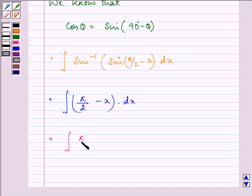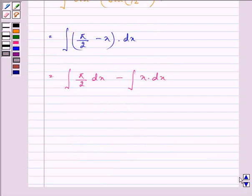That is, integral of pi by 2 dx minus integral of x dx, which equals pi by 2 times x minus x squared by 2 plus c.